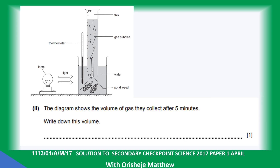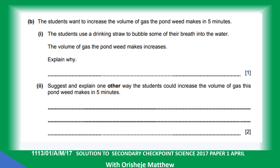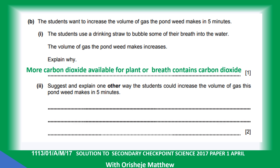The diagram shows the volume of gas collected after five minutes. A student uses a drinking straw to bubble some of their breath into the water, and the volume of gas the pond weed makes increases. This is because breath contains carbon dioxide, which is needed for photosynthesis. More carbon dioxide is available, so more photosynthesis takes place, as carbon dioxide is combined with water.